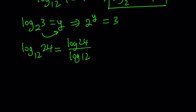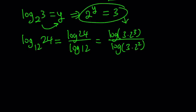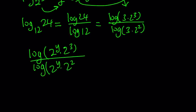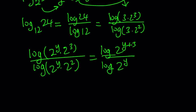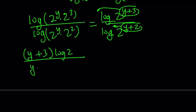Similarly, we're going to factor 24 and 12. We can write 24 as 3 times 2 to the third power, and 12 as 3 times 2 to the second power. Here's what I'd like to do differently — instead of separating them, I'll use the identity 2 to the power y equals 3. So let's replace 3 with 2 to the power y. That gives us 2 to the power y times 2 to the power 3 in the numerator, and 2 to the power y times 2 squared in the denominator. Adding the exponents gives 2 to the power y plus 3 over 2 to the power y plus 2.